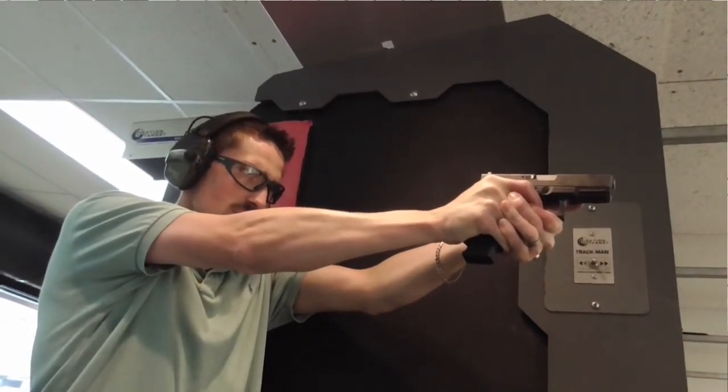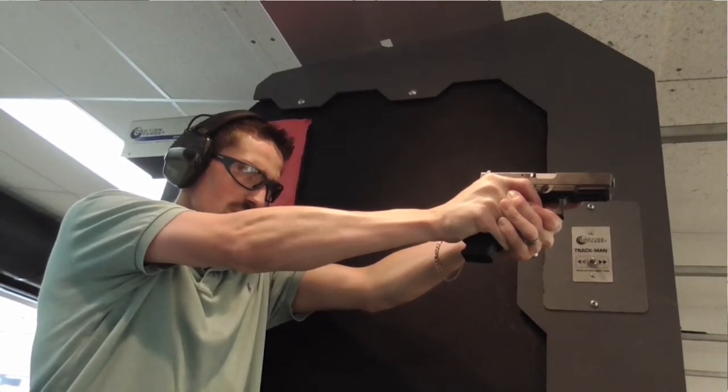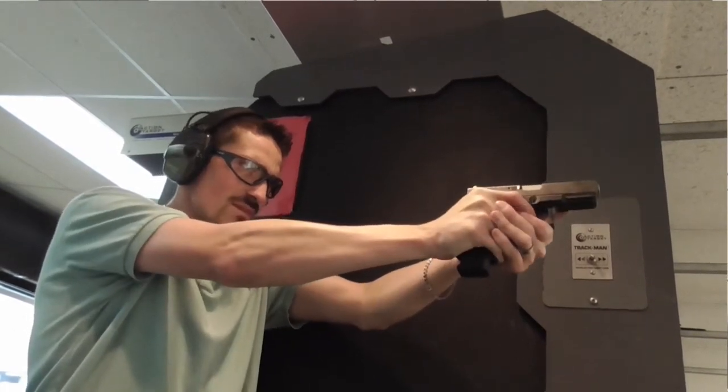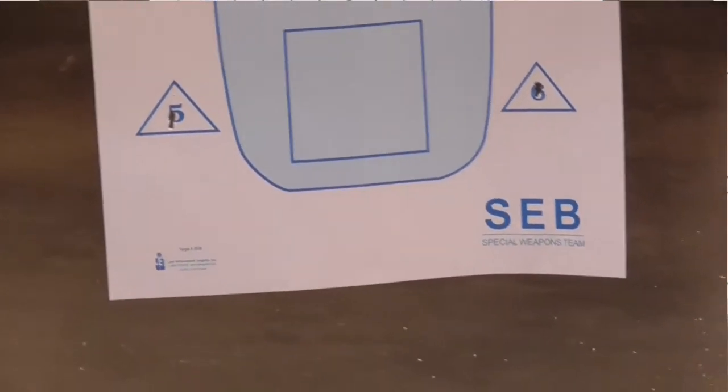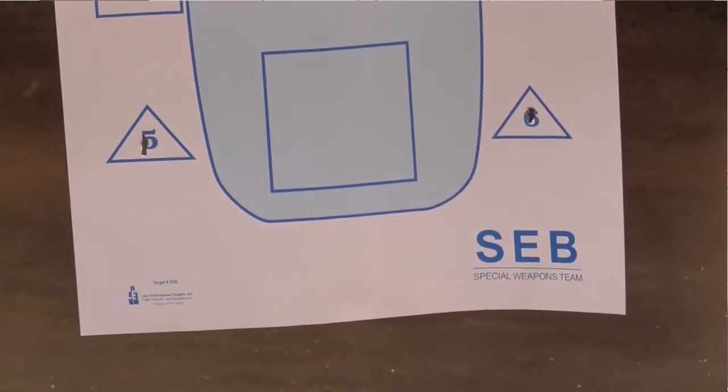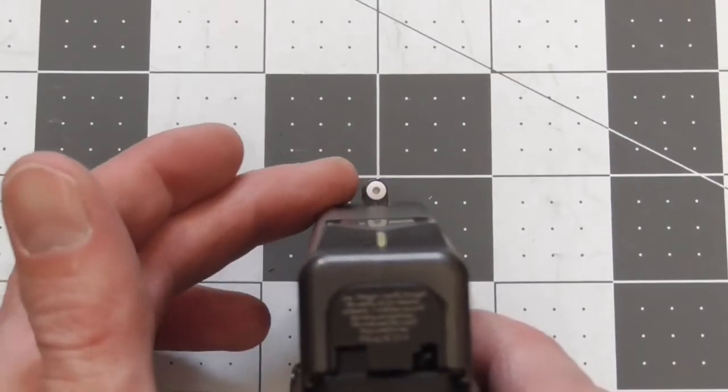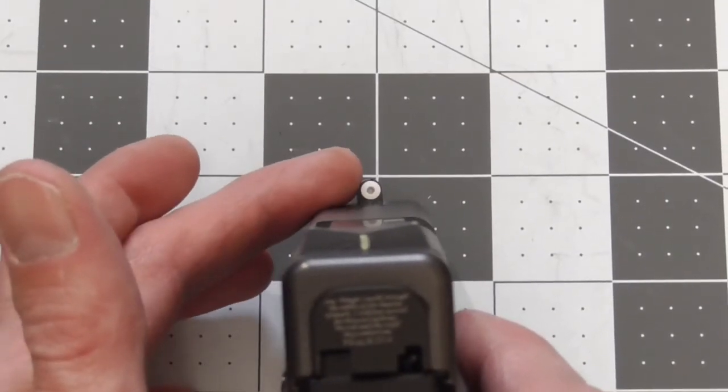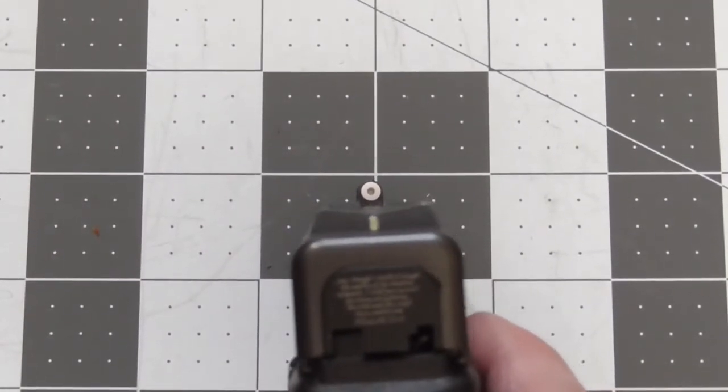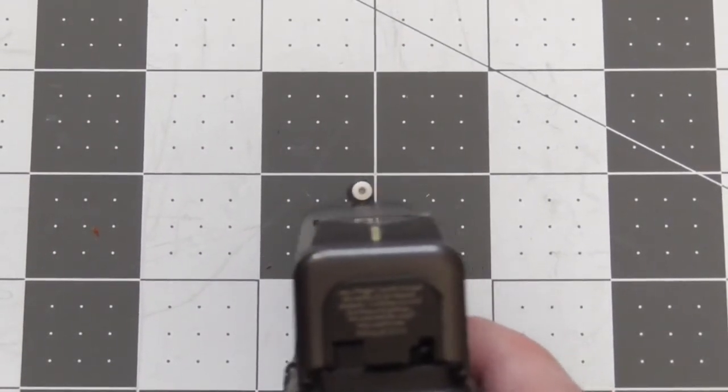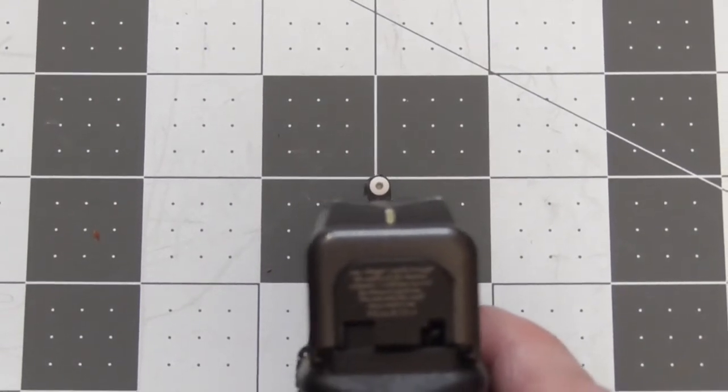Now, the one thing I did notice with this: like I said, it is a defensive sight. As far as accuracy is concerned, I found that I could get very accurate shots in close if you paid attention. All you do is you'll see that there is a smaller dot inside of the big dot, which is actually the tritium vial in there. You line that up for more precise shooting, and I found that to be very effective.